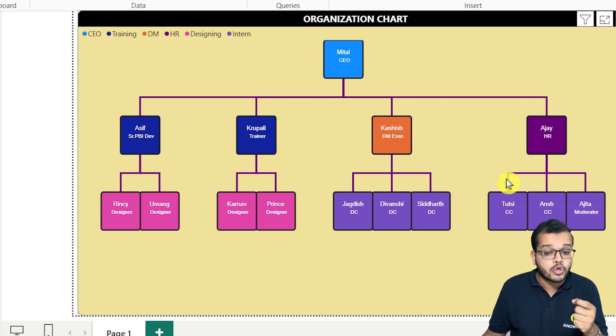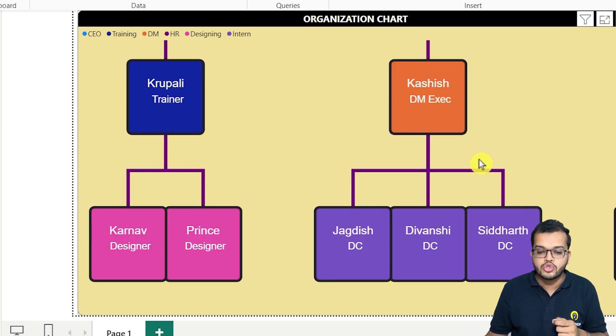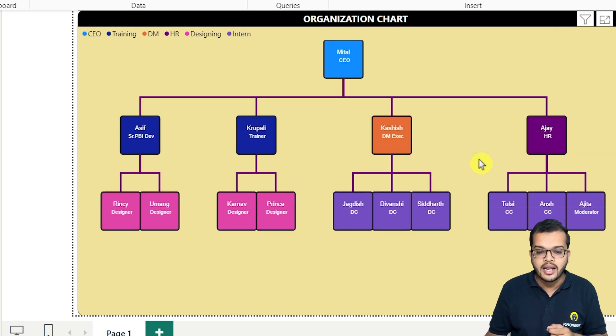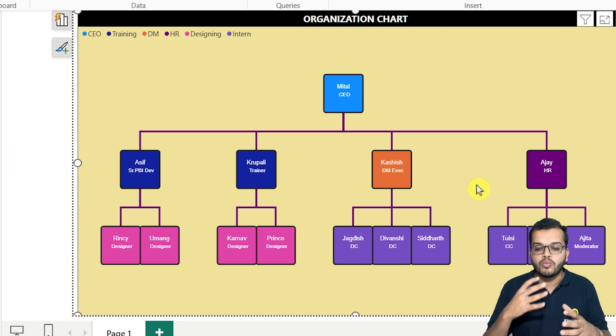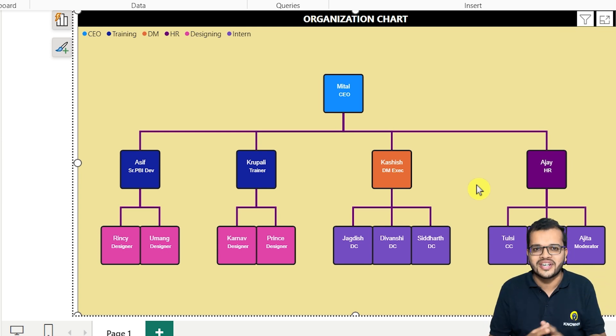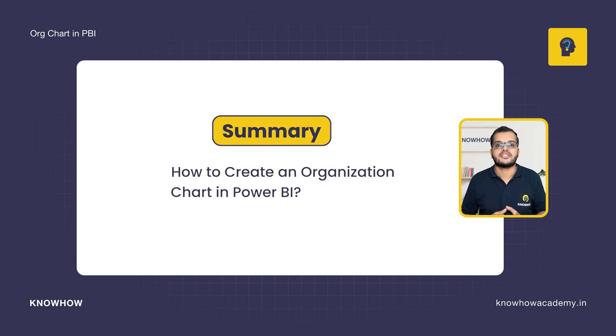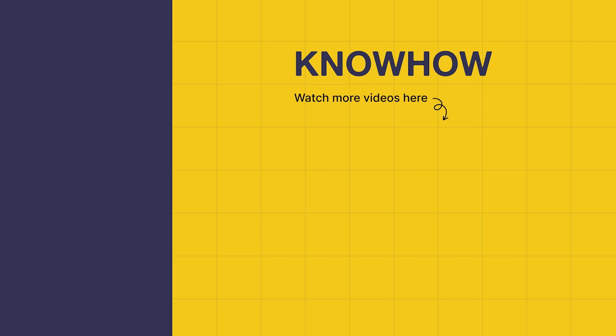One interesting thing: you can zoom in or zoom out using your cursor, depending on how you would like to present it and depending on the hierarchies in your dataset. In this video, we have learned how to create an organization chart in Power BI. Thank you for choosing KnowHow Academy as your source for IT knowledge. We are always here to help you navigate the tech world. If you have any questions, do not hesitate to reach out. Stay curious and keep learning.